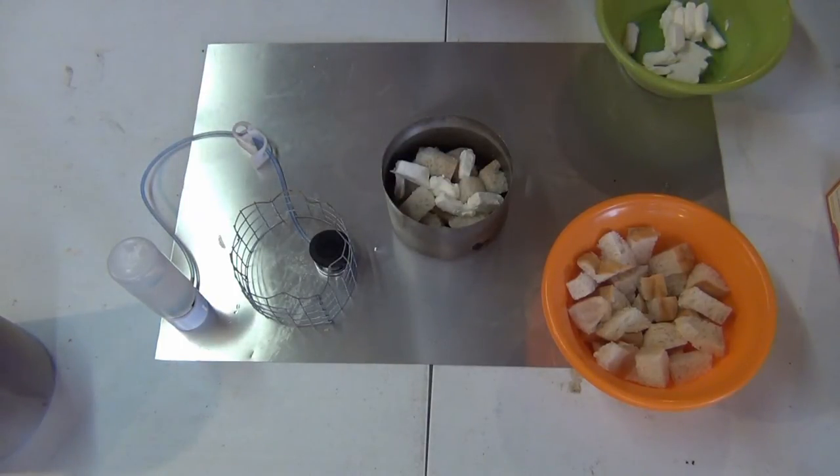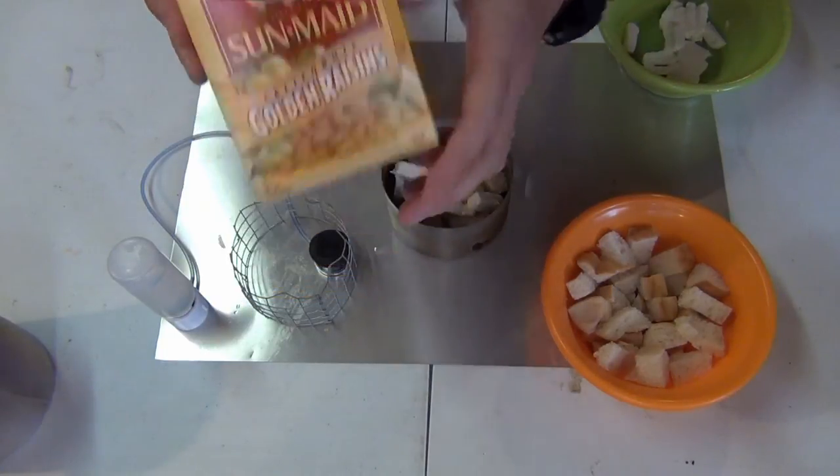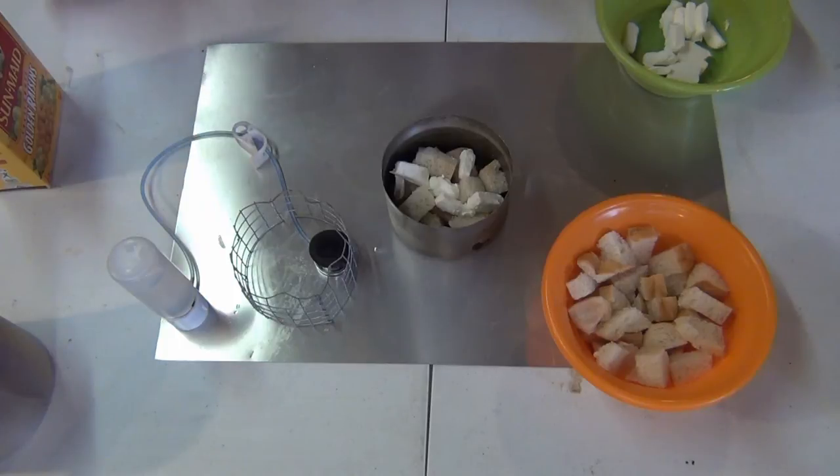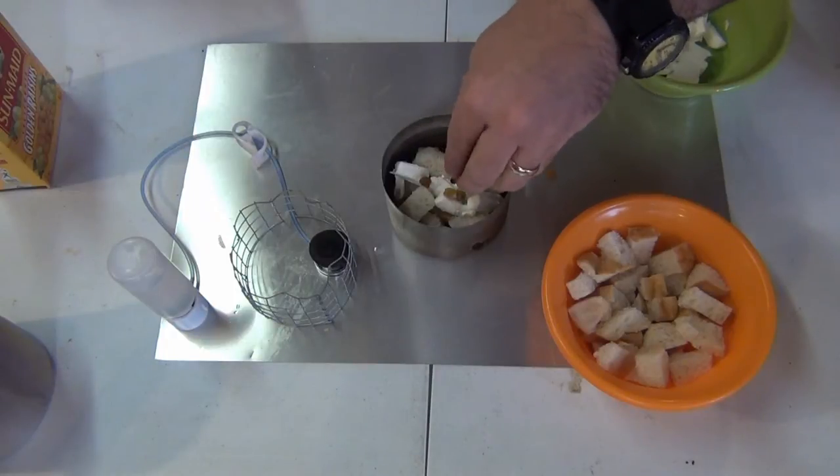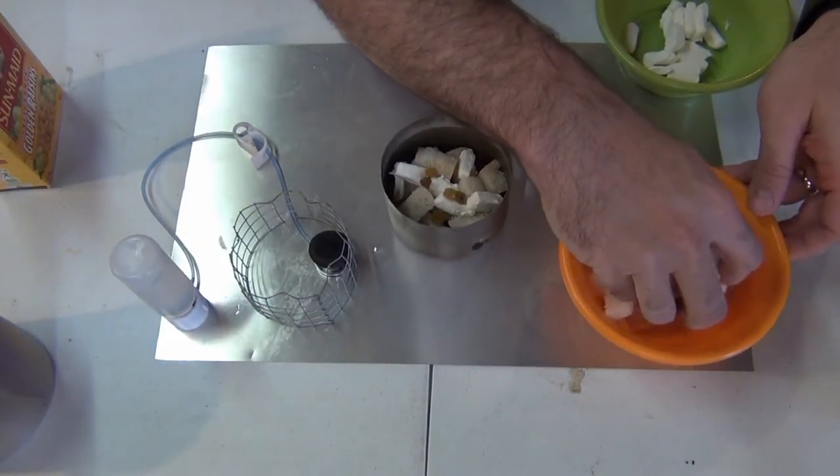Get that paper towel right quick. And then we're going to take a few golden raisins, drop a couple just for some little flavor. Drop a few of them down in here. And then we're going to repeat that process.